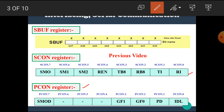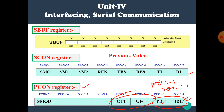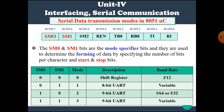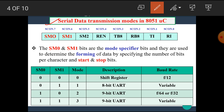The last one is the PCON register. PCON stands for power control register. As the name implies, it contains two important bits: PD and IDL. When PD equals 1, the microcontroller goes into power down mode. When IDL equals 1, the microcontroller goes into idle mode. These are the two general purpose flags. Now let's see today's topic: serial data transmission modes in the 8051 microcontroller.